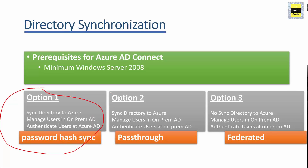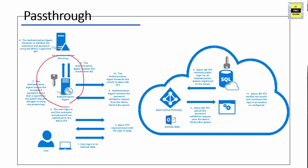The second option is Pass-Through Authentication, another simple password validation method for Azure Active Directory. It runs a software agent on one or more on-premises servers — it doesn't have to be your Active Directory or Exchange server, it can be any on-premises server. When authentication is required, the agent authenticates against on-premises Active Directory and responds to Office 365. The key difference from PHS is that validation always occurs through on-premises.